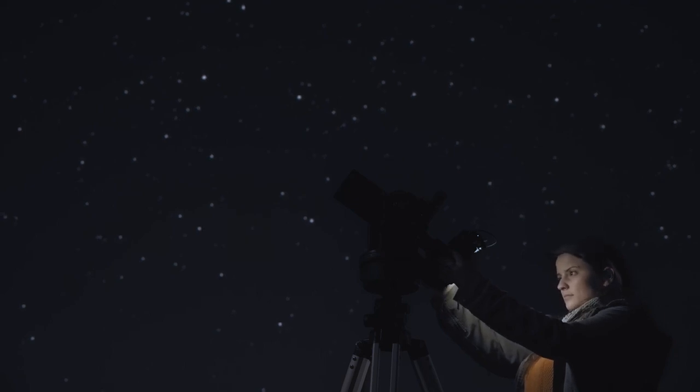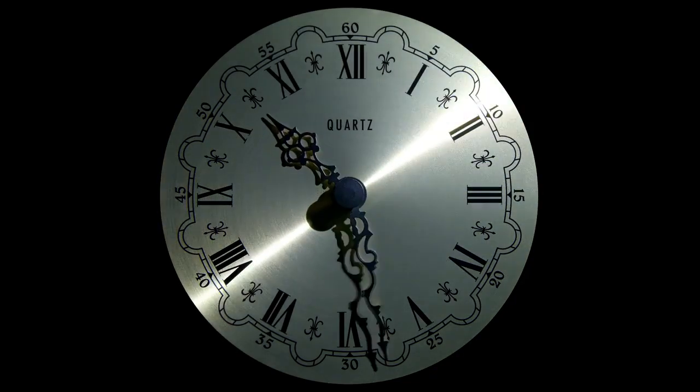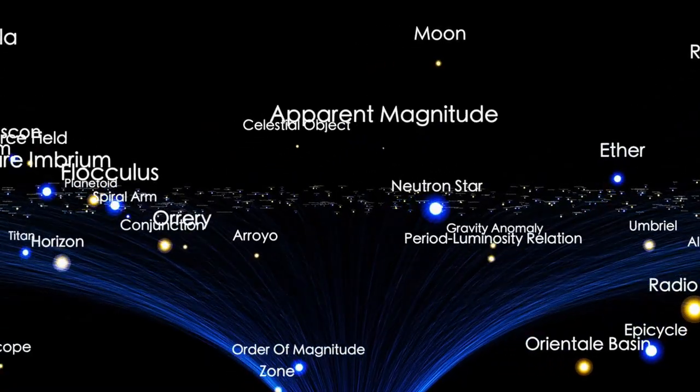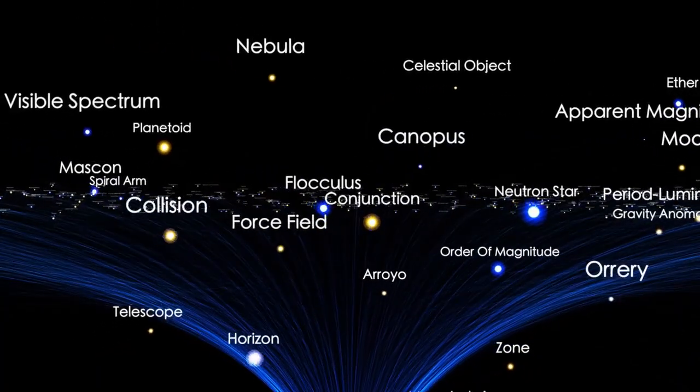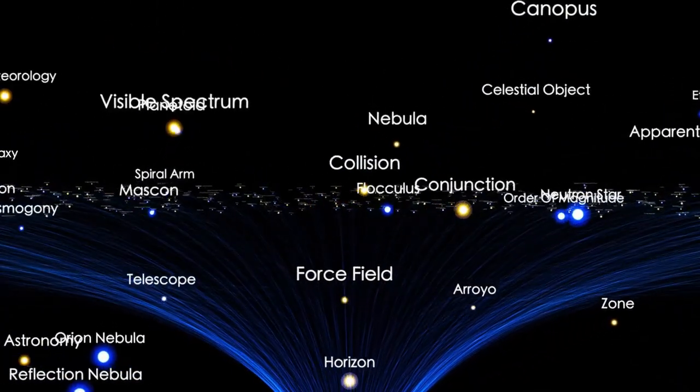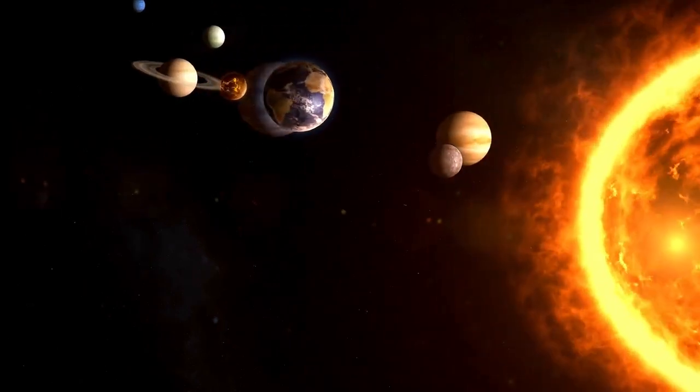This peculiarity is no coincidence, since Betelgeuse, as the star is called, is no ordinary star. Although to us it may appear to be just one more in the vast firmament, it is located at a distance of more than 640 light years from us.